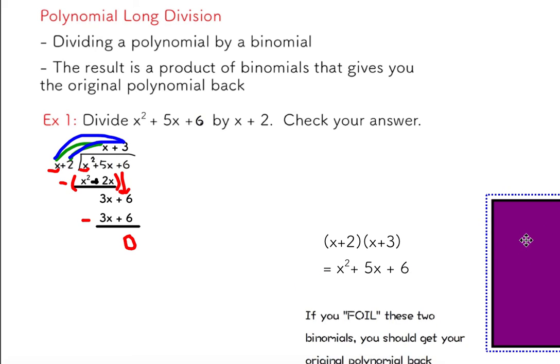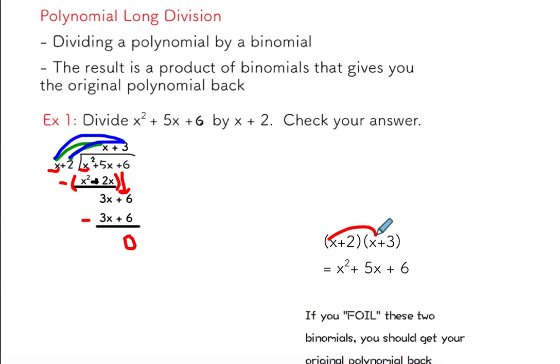All you need to do is just show using FOIL. Remember, you multiply your first times your first, outside times outside, inside times inside, and last times last. And you'll see that you do get the original trinomial back.